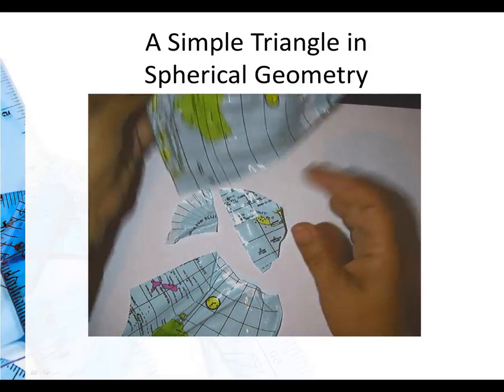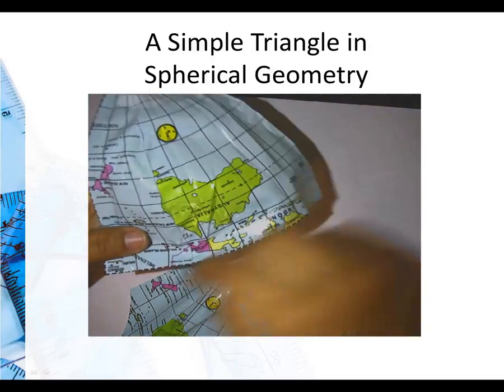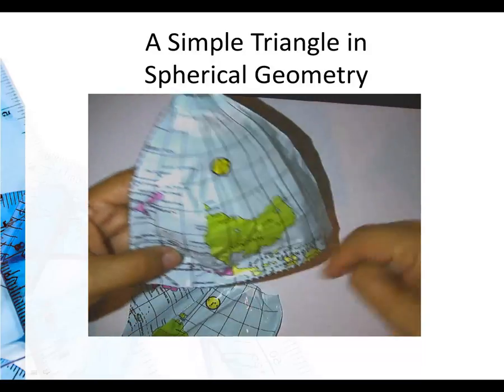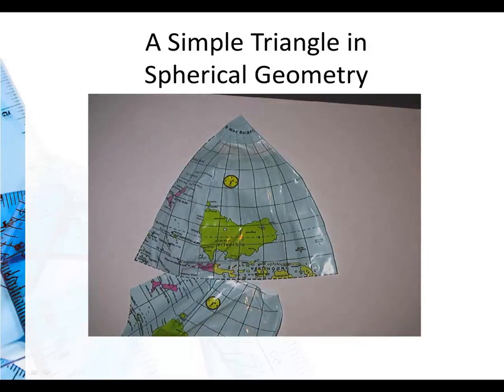So for this particular case where I went 90 degrees along one side and I used the great circle of the equator and two longitudes, I got 270 degrees in a triangle for spherical geometry.